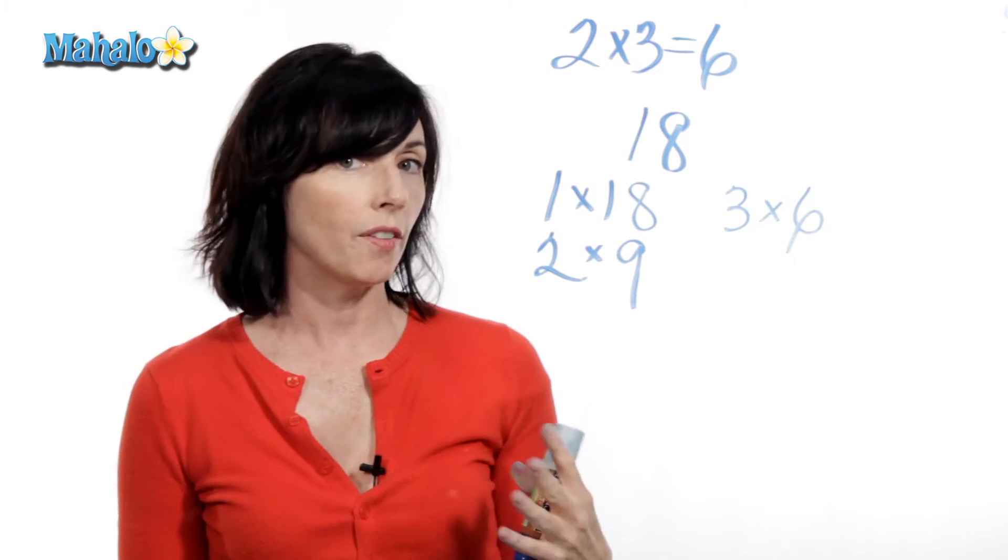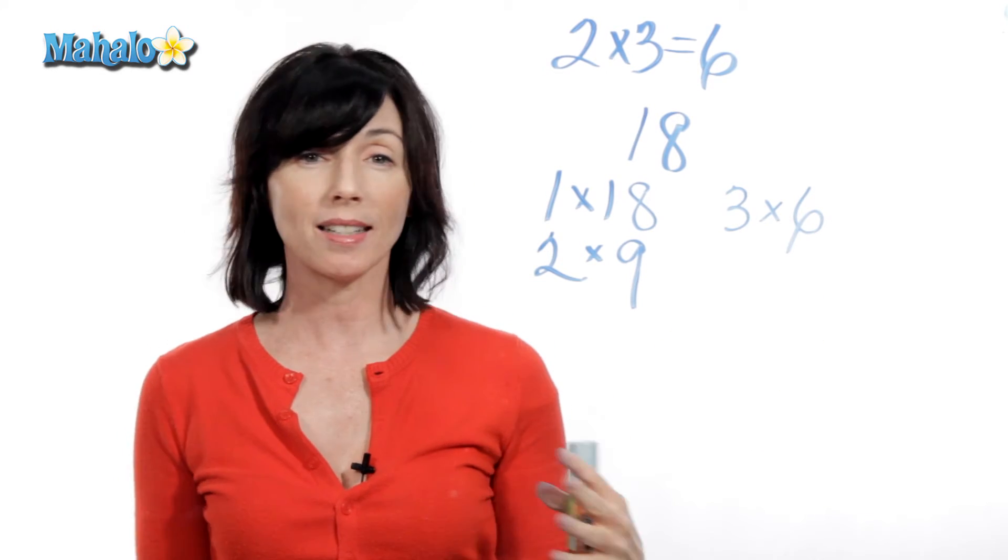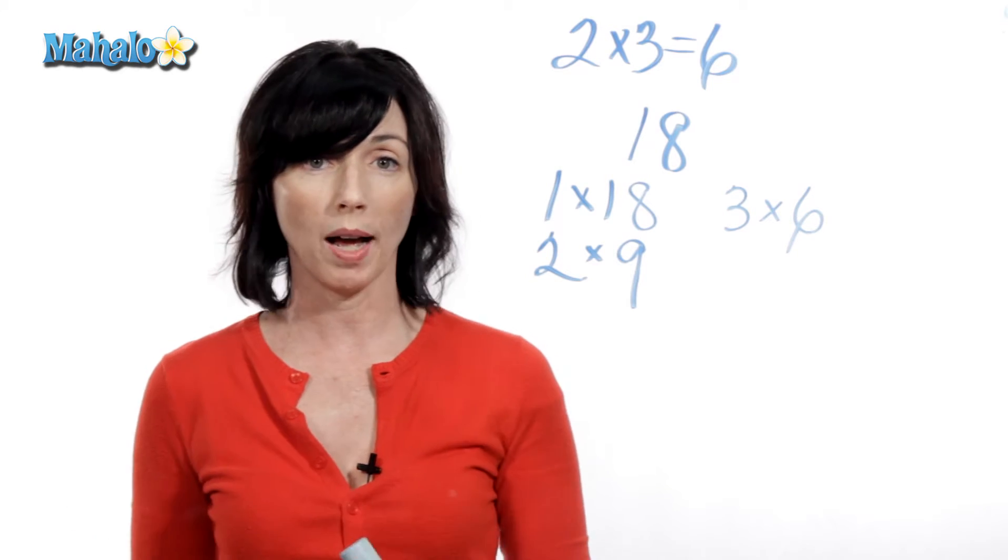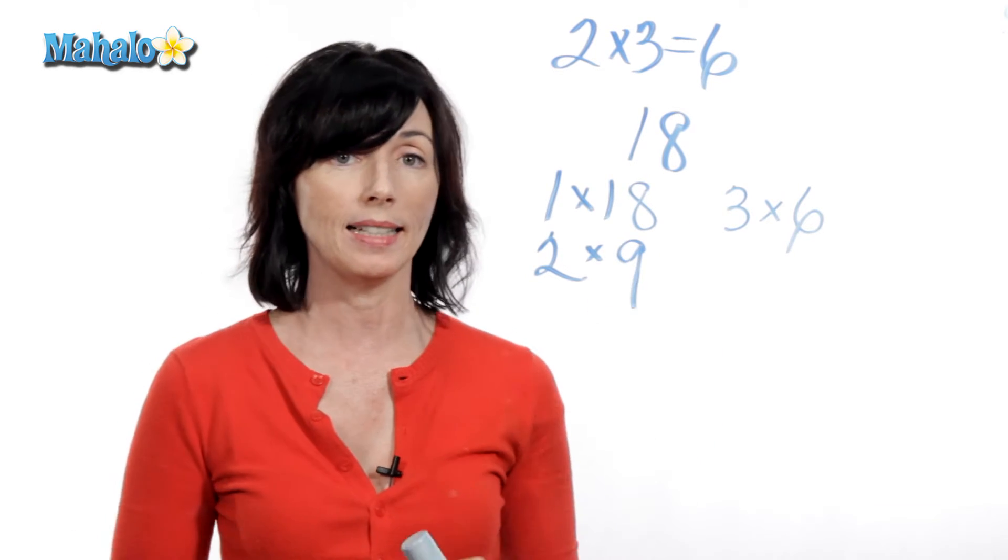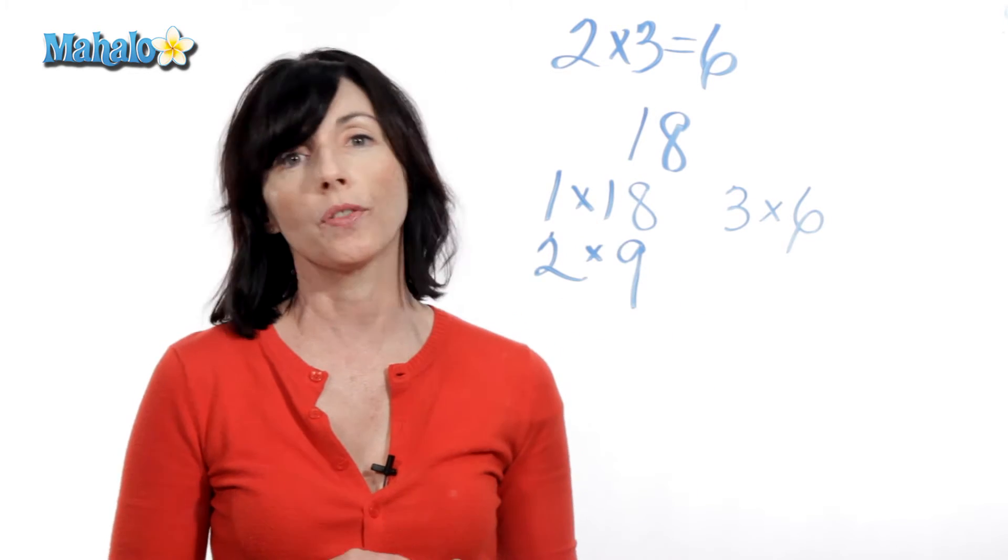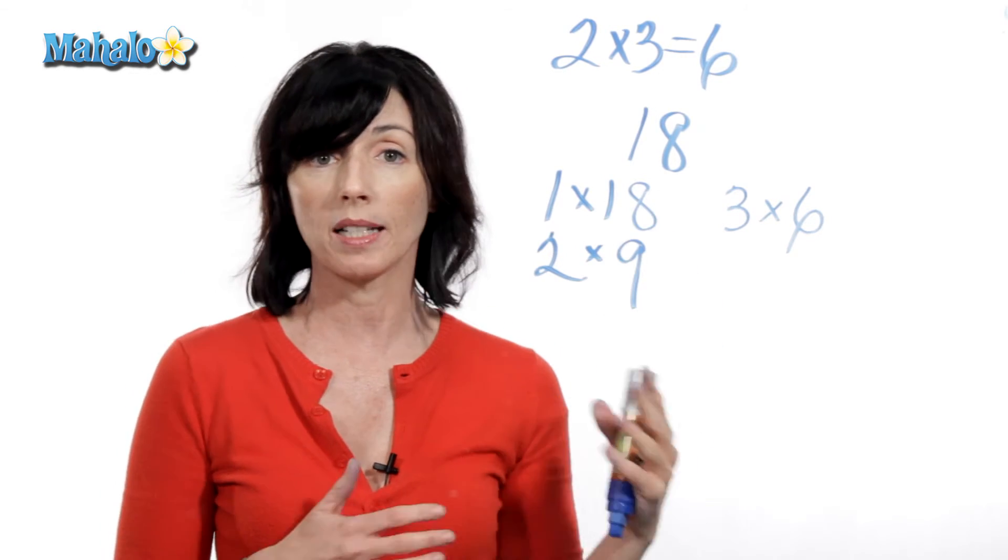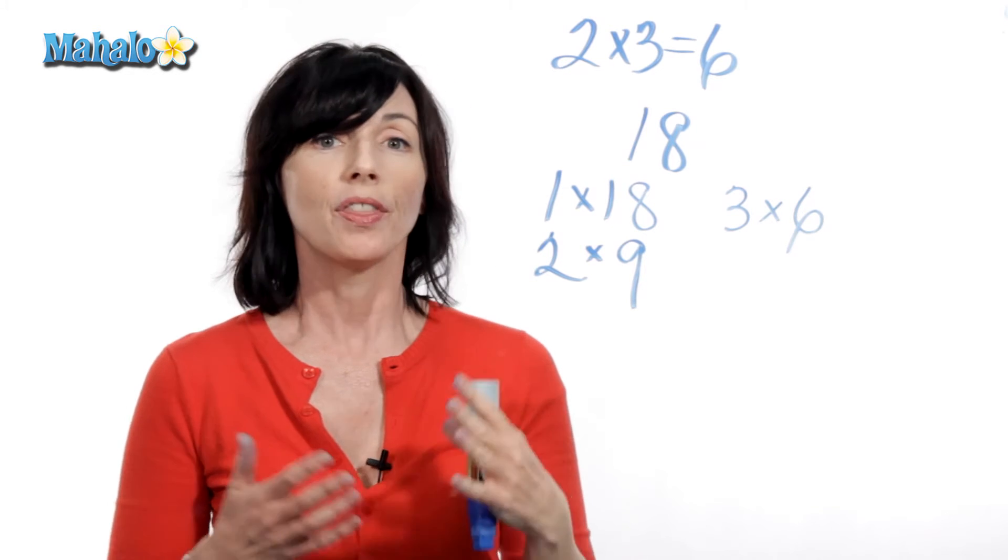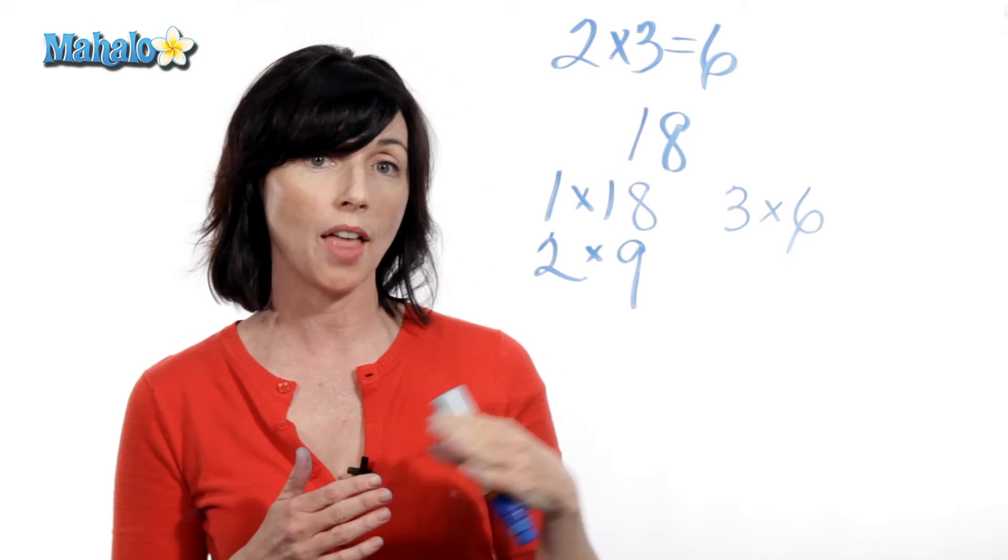4 and 5 aren't factors of 18, because there isn't another whole number you can multiply 4 by or multiply 5 by and get 18. 6 we already know about. 7 and 8 also aren't factors of 18. If you divide 18 by 7 or 8, you'll get a remainder. The same is true for the whole numbers 10 through 17.